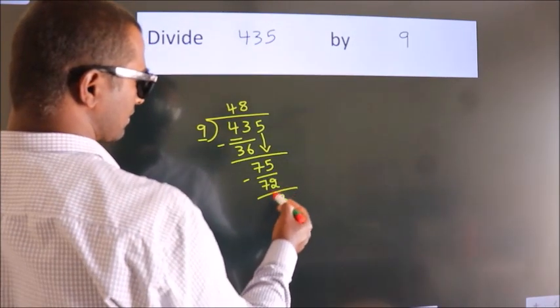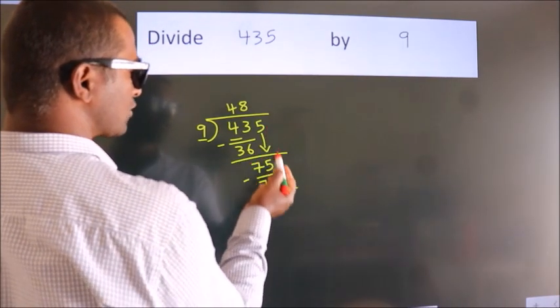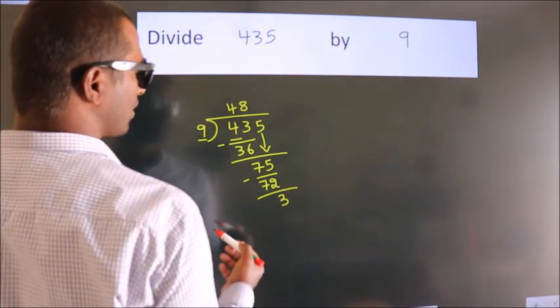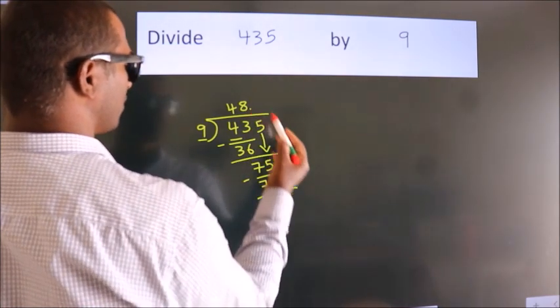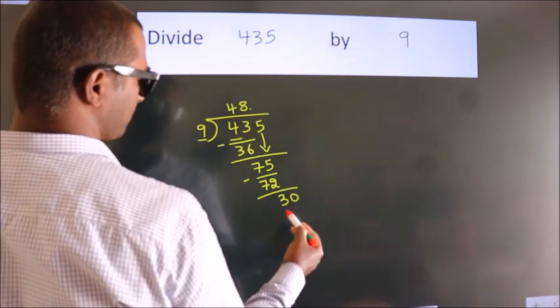After this, no more numbers to bring it down. So what we do is we put a dot and take 0. So 30.